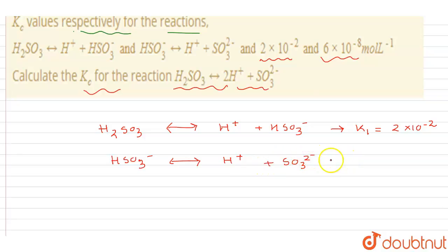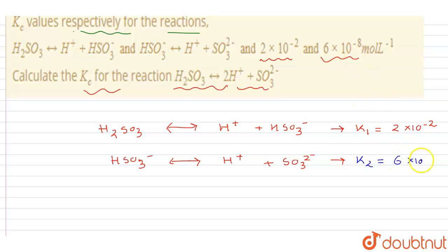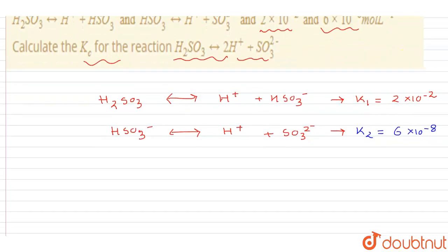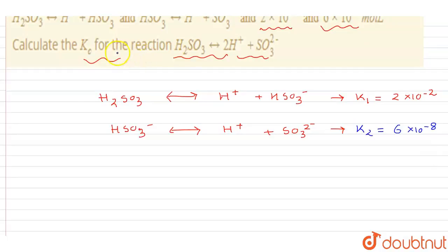If we assume the equilibrium constant of equation 1 as K1, its value is 2×10⁻². For equation 2, K2 is given as 6×10⁻⁸. The units are mole per liter. These are the two equations from which we have to find the equilibrium constant Kc.